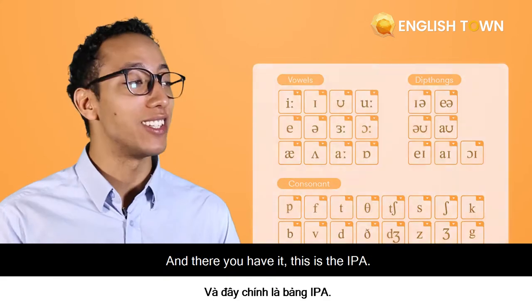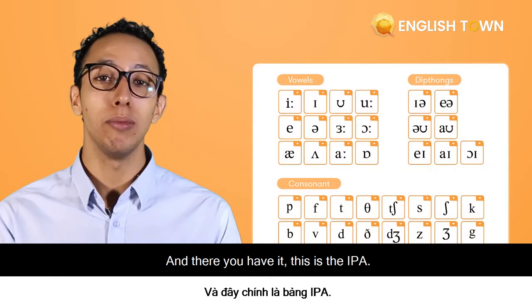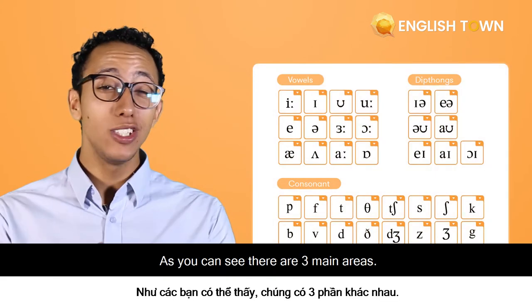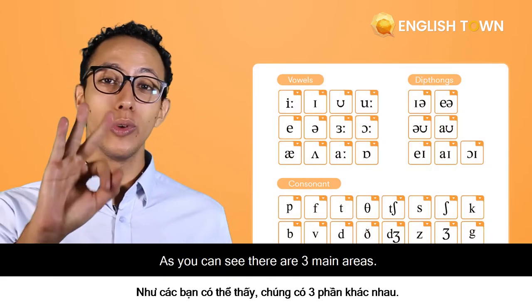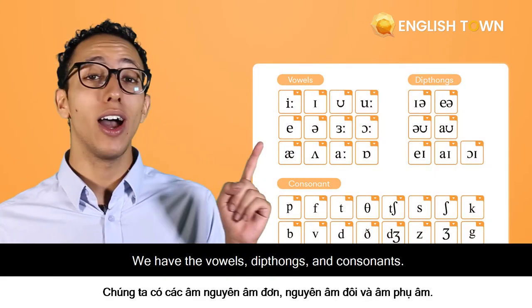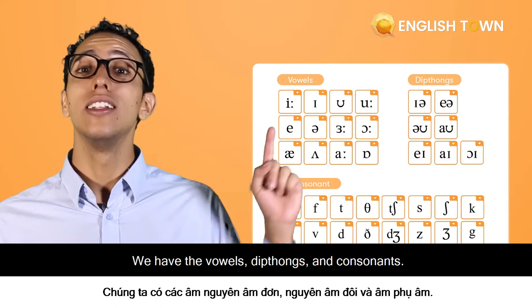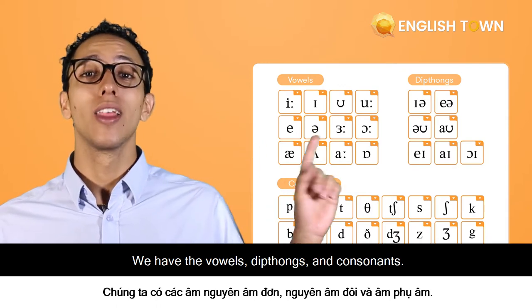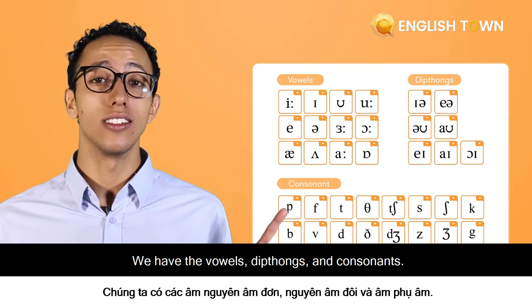And there you have it — this is the IPA. As you can see, there are three main areas: we have the vowels, diphthongs, and consonants.